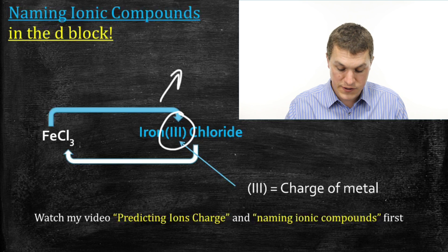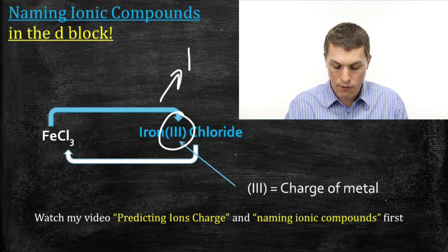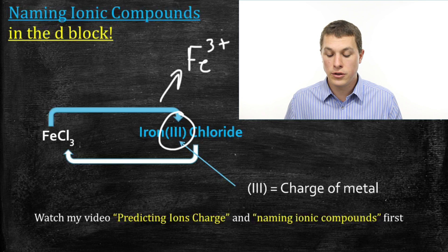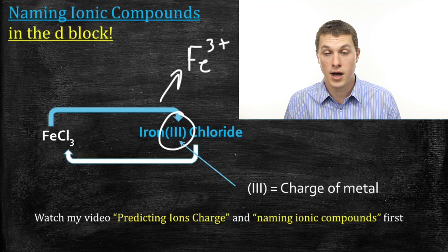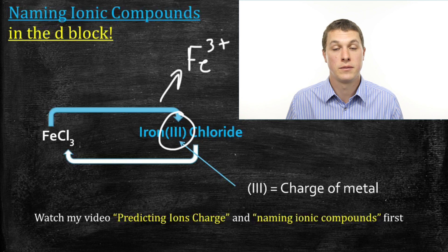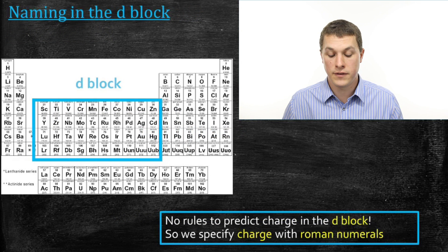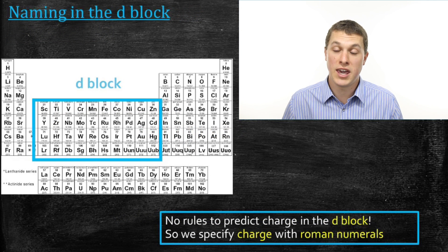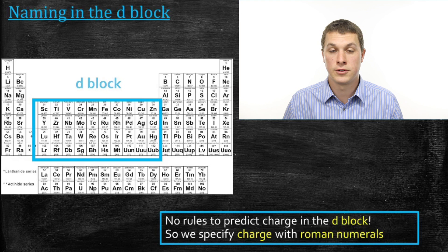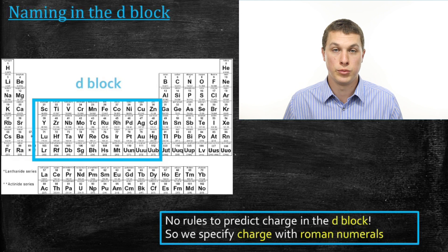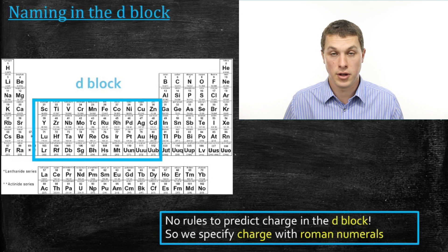Since it shows us the Roman numeral 3, what we have is Fe³⁺. So that's the main difference here between this video and the last — now we use Roman numerals on the metal since it's from the D block, instead of predicting the charge from its position on the periodic table. The D block is those elements in the middle of the periodic table, and since we can't predict the charge there, we use Roman numerals on those metals. Roman numerals are only for metals in the D block.